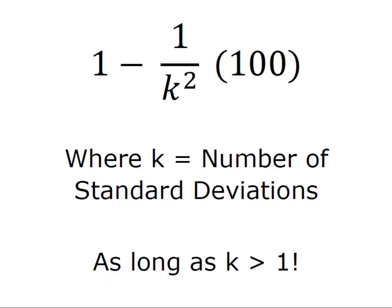Instead, in the case of non-normal distribution or a distribution where the shape is not known, we're going to apply Chebyshev's theorem. Chebyshev simply says we can find out the percentage of data that falls within k standard deviations of the mean, where k represents the number of standard deviations, and we do that by taking 1 minus 1 over k squared and we're going to multiply it by 100 because we want to express it as a percentage.